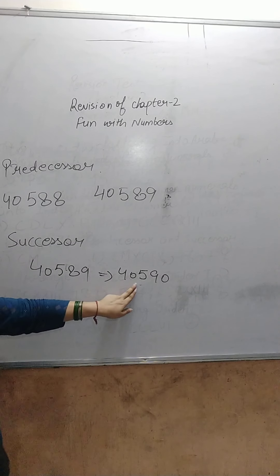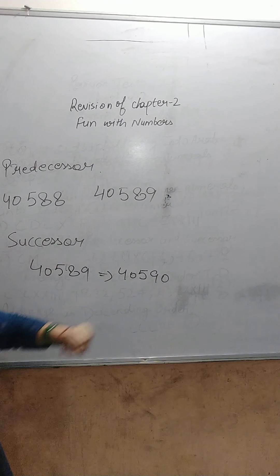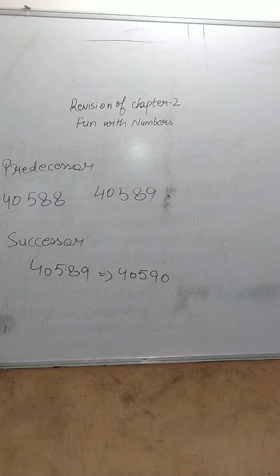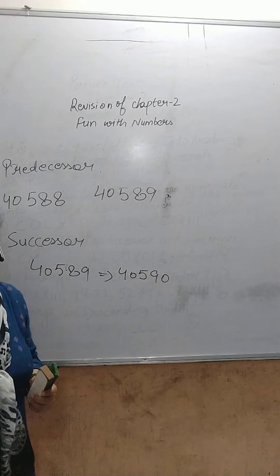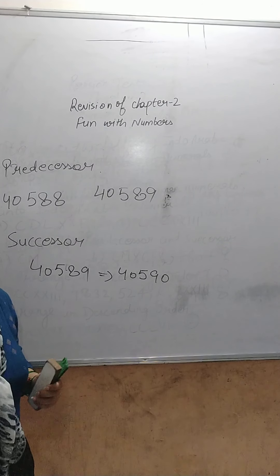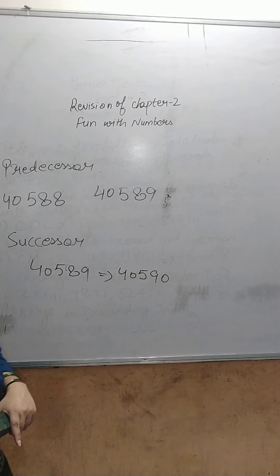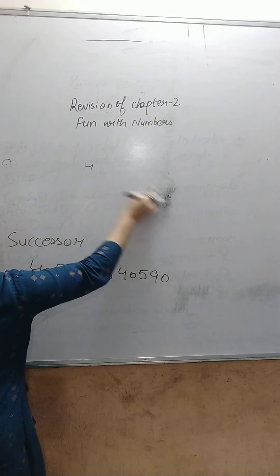40,590 is the successor of 40,589. So this is predecessor and successor. Now the next topic is comparison of 5-digit numbers. If we have 5-digit numbers, we have to tell which one is greater and which one is smallest — how to compare those numbers.